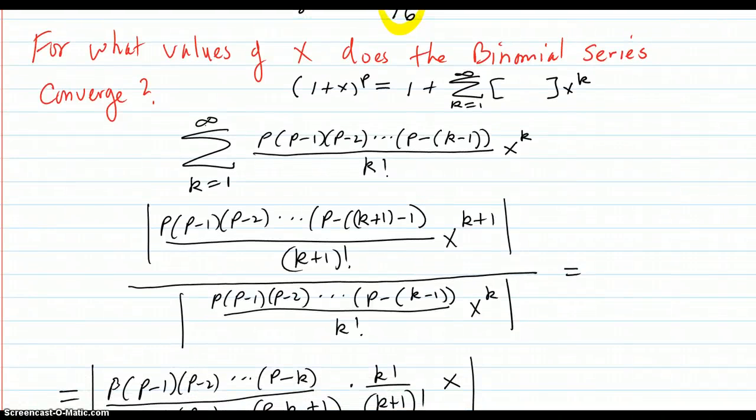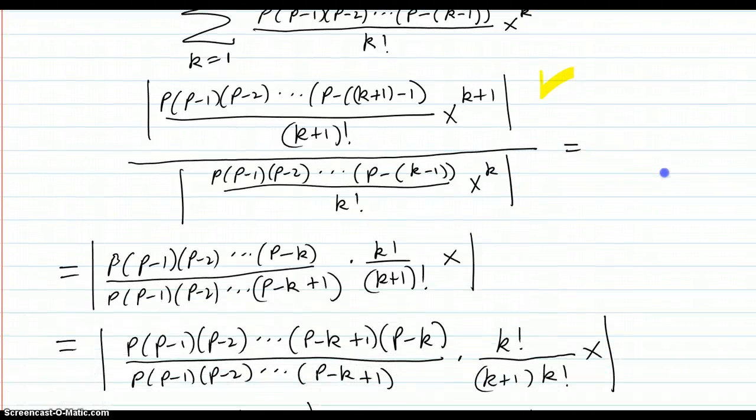For what values of x does the binomial series converge? We were interested in that before. So, 1 plus x to the p equals 1 plus the k 1 to infinity series that we had. So, we just want to see if this series converges or not. Because if it does, then adding 1 won't affect it. And if it doesn't, adding 1 won't affect that either. So, we use the ratio test. Here's your ratio test on the terms.